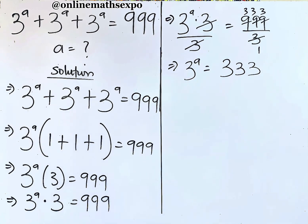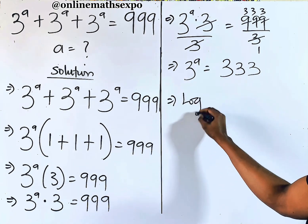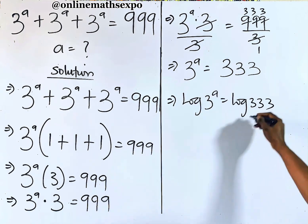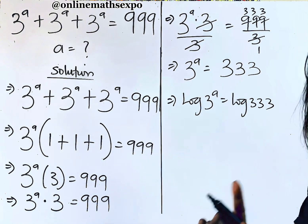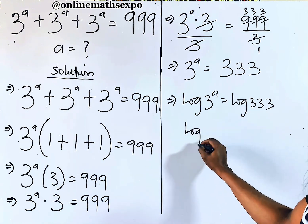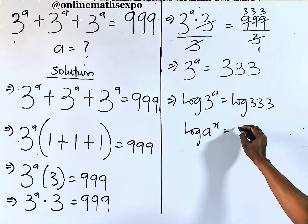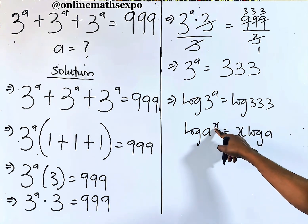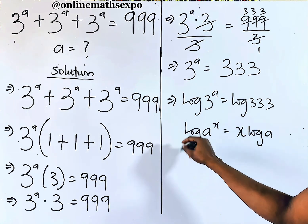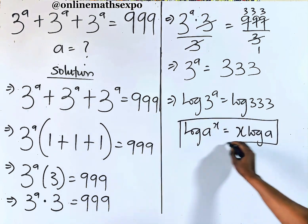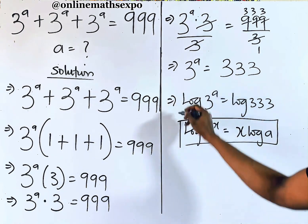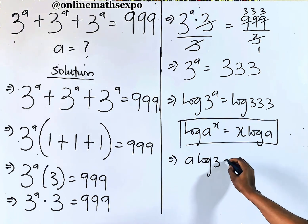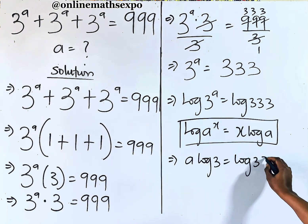Interesting. Now at this point, just take the log of both sides. To get a, remember: for every log of a to the power of x, it is always equal to x log a — the power always multiplies the log.